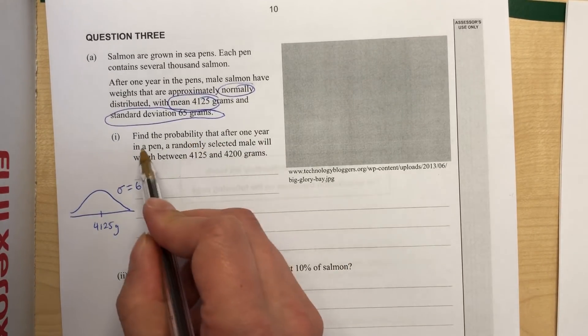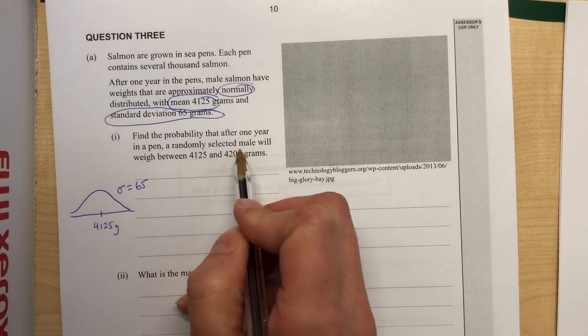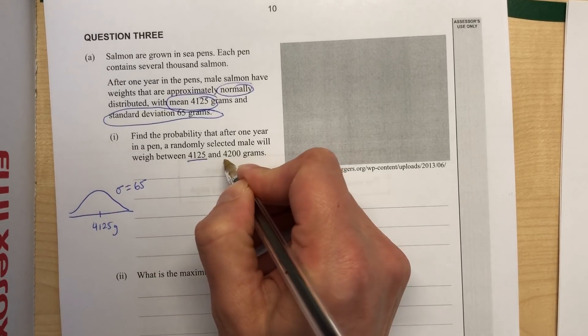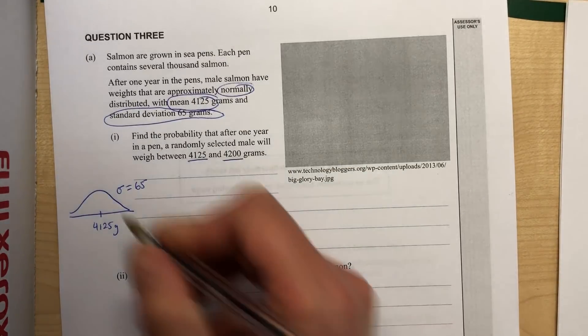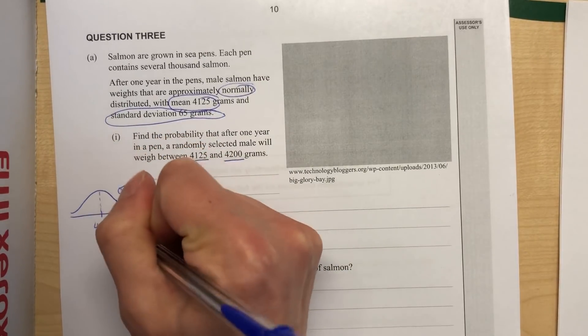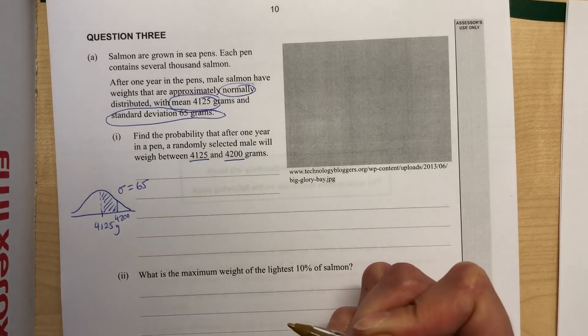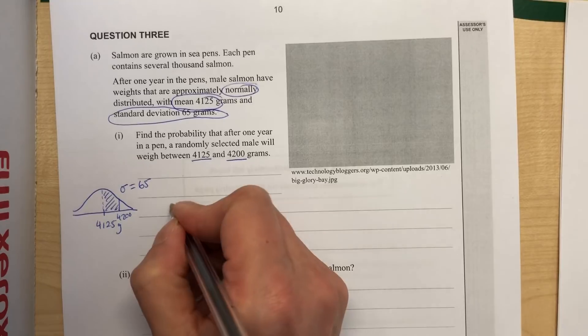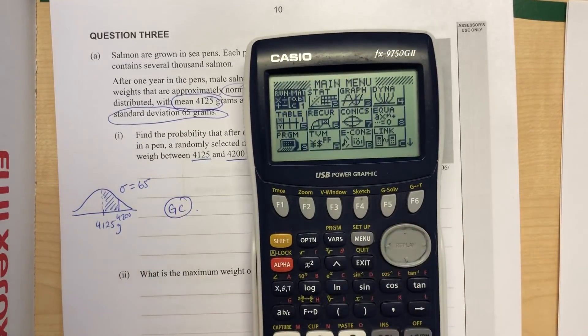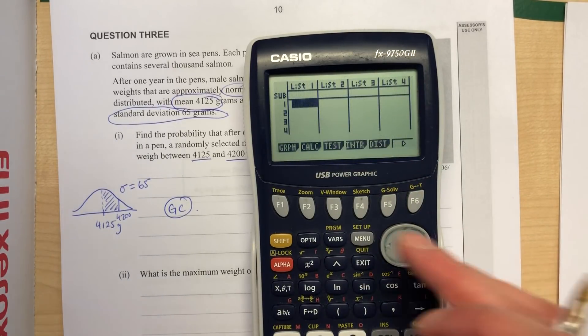Find the probability that after this one year in the pens, so it's just this situation, don't let that put you off. A randomly selected male will weigh between 4125 and 4200 grams. So on our diagram is between this number and 4200. We want in between that, so we want to find the area of that shaded region. So we go to our graphics calculator and I'm just going to note down GC to show my marker that that's what I'm using.